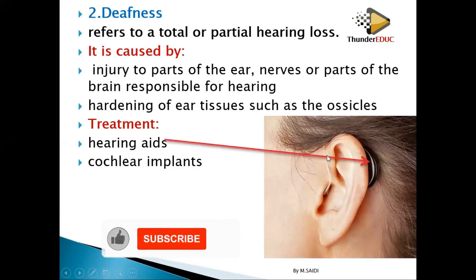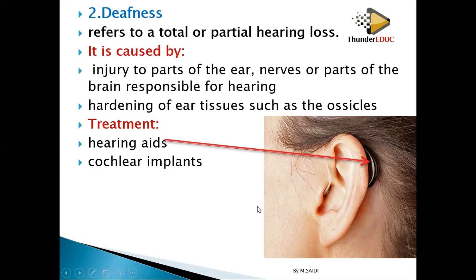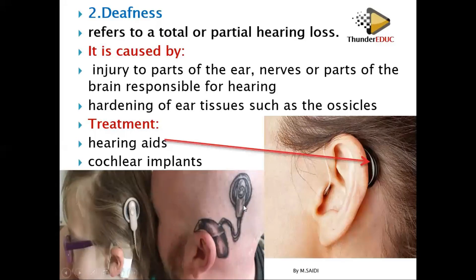A hearing aid is like a microphone — it aids and helps improve hearing. The cochlear implant requires surgery where they insert it, meaning your natural ear is no longer used at all. This is what you call a cochlear implant.